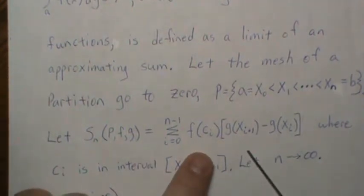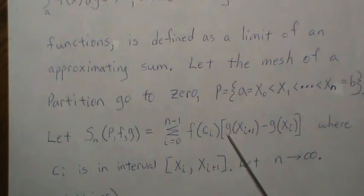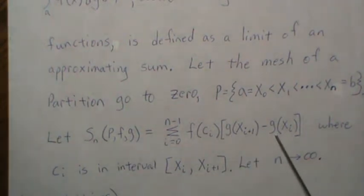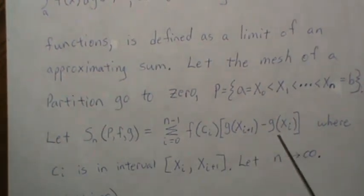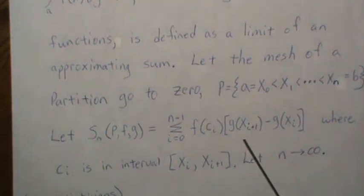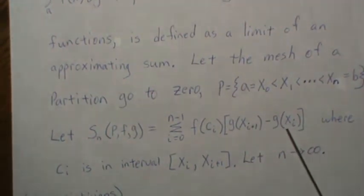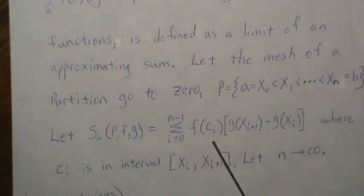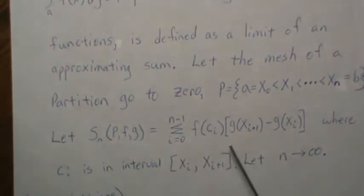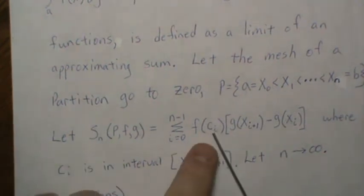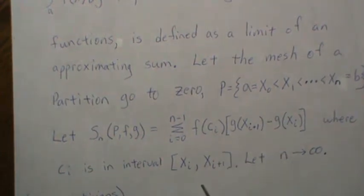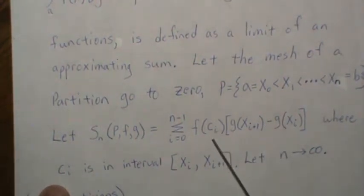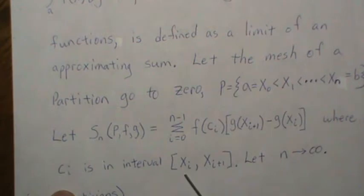This is almost identical to the Riemann sum. Instead of using x_{i+1} and x_i, we use g(x_{i+1}) and g(x_i). There are different ways to do Riemann integration where you can use the lower bound, upper bound, or pick some point in the interval, and we're going to use the approach where c_i is some value in this interval.